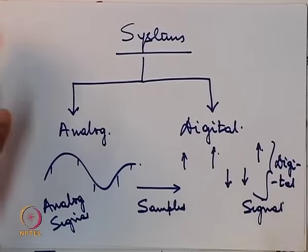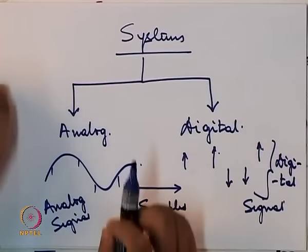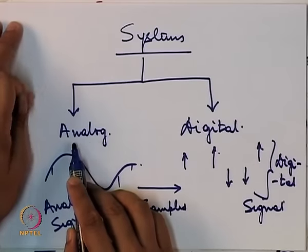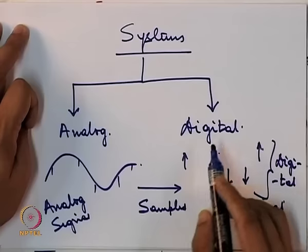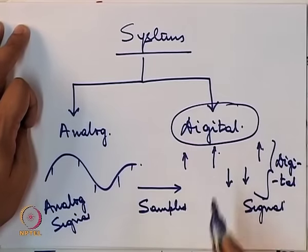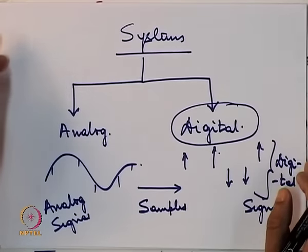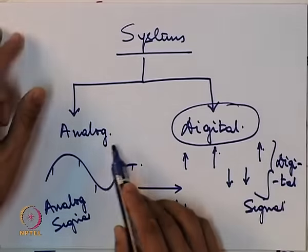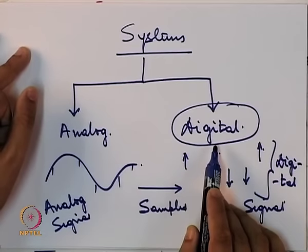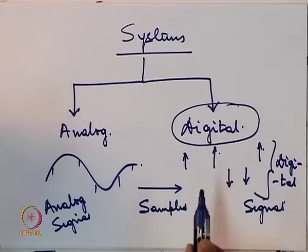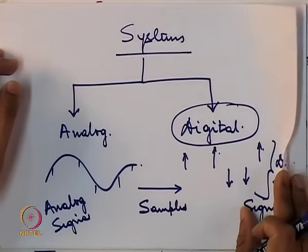We have a dilemma: there are two kinds of signals — analog, which are analogous to the signals we see in day-to-day life, and digital, which are discretized. If we sample an analog signal at various instances the values we get are the digital signal. The dilemma is which one to choose. It might seem logical to digitize everything and do everything in the digital domain — but unfortunately that is not possible.